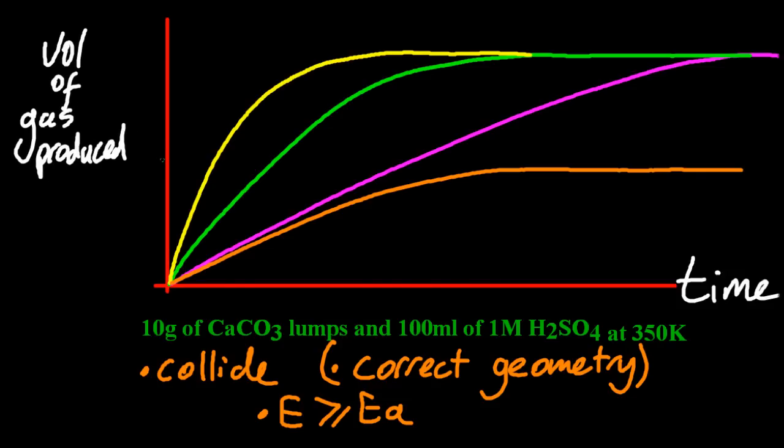And this final graph here, this final line on the graph, I like to throw a weird one in. Now, one of the reactants must have run out early, and we've only produced half as much gas. So maybe there was only 5 grams of chalk, and that was the limiting reactant.